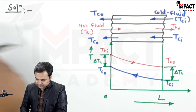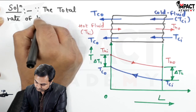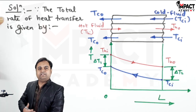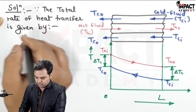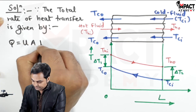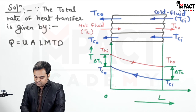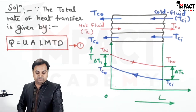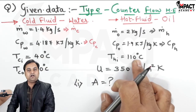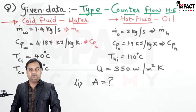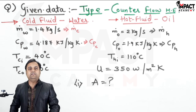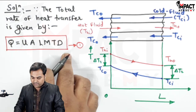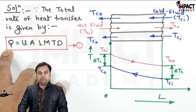The total rate of heat transfer for a heat exchanger — whether parallel flow or counter flow — is given by Q = U·A·LMTD, using the LMTD method. We use LMTD because three out of four temperatures are known. If only two temperatures (typically the inlet temperatures) were given, we would use the NTU method instead.